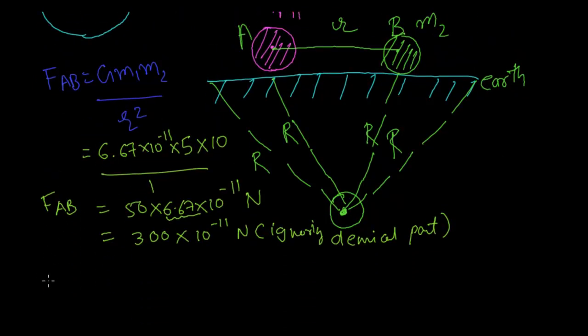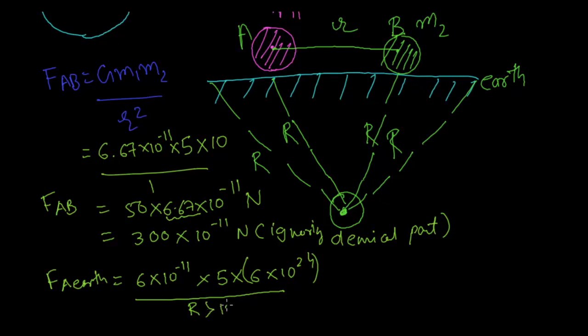Now let us calculate the force between A and earth. Mass of first object is 1, so 6 times 10 raised to minus 11. We are ignoring the decimal part. Then mass of the first object is 5 kg. 6 times 10 raised to 24 kg is the mass of the earth. Yes, this is the mass of the earth. And the distance would be R, that is the radius of the earth. Now this radius is surely going to be greater than 1 meter.